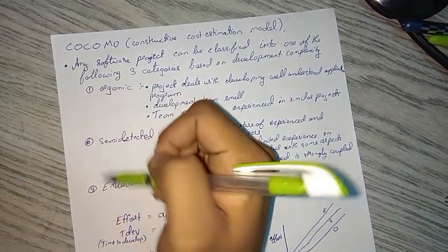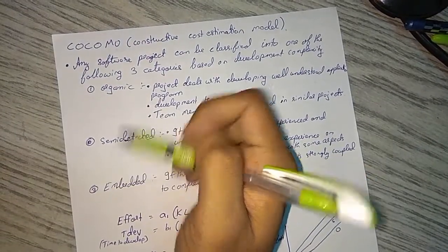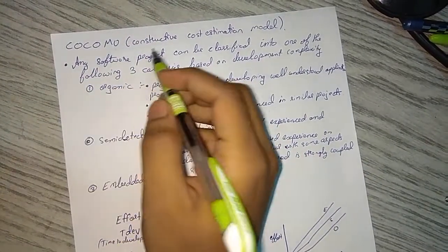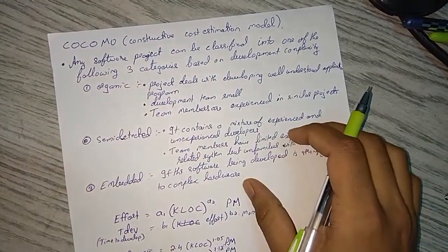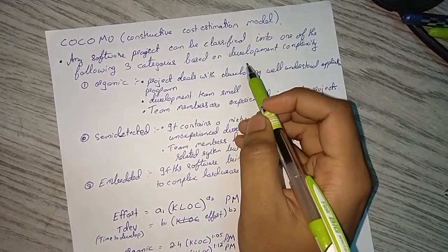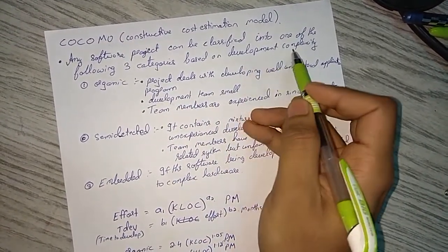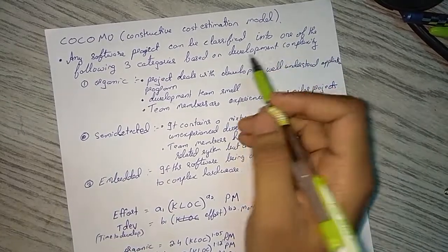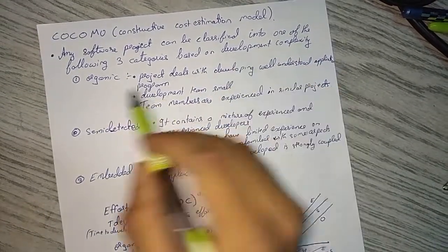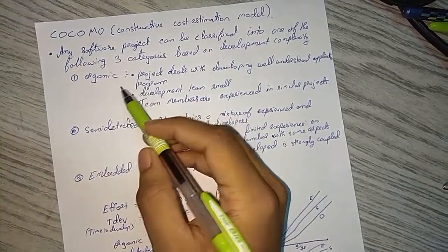We have a basic model, intermediate model, and a complete model. So first we'll see the basic model. Any software project is divided into three categories based on the complexity and development complexity. First category is organic.